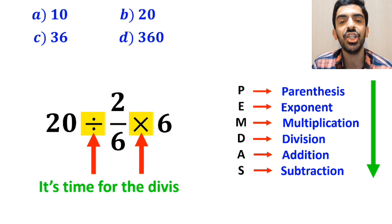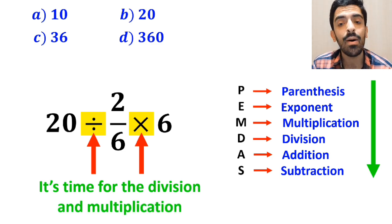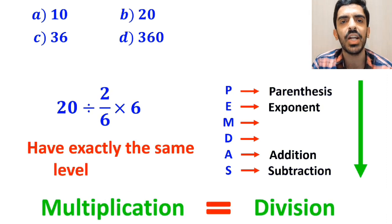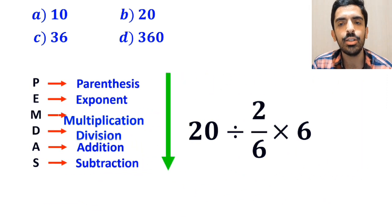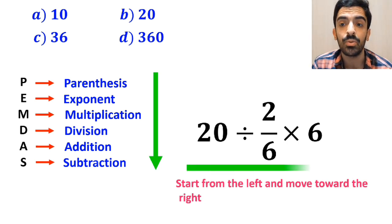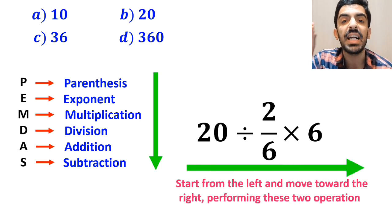Alright, now it's time for the division and multiplication. However, it's very important to note that according to the PEMDAS rule, multiplication and division have exactly the same level of priority. In this situation, the best strategy is to start from the left and move toward the right, performing these two operations in order.